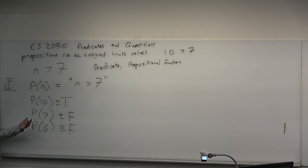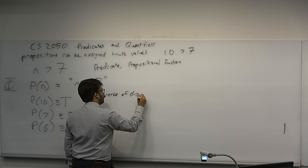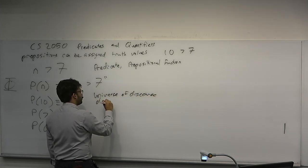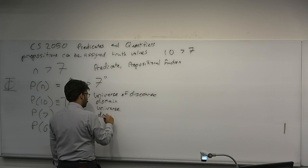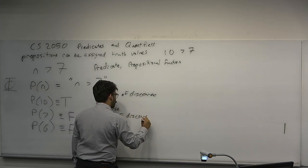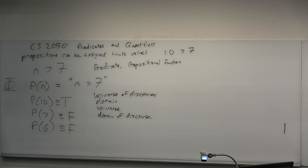There's also something called the universe of discourse, or simply the domain. We use 'universe of discourse' because it sounds cooler. This will become more formal next week when we go into set theory. The propositional variable may take on a value from some known collection of possible values. For example, n's universe of discourse is numbers — real numbers, natural numbers, we'll have to talk more about set theory. But it's understood that n comes from some specified universe of discourse.